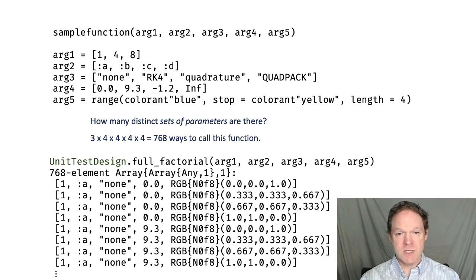Consider the sample function at the top of this page. It has five arguments, which have three or four possible values. If I were to call this every possible way there were to call it, I'd have to call it 768 times.